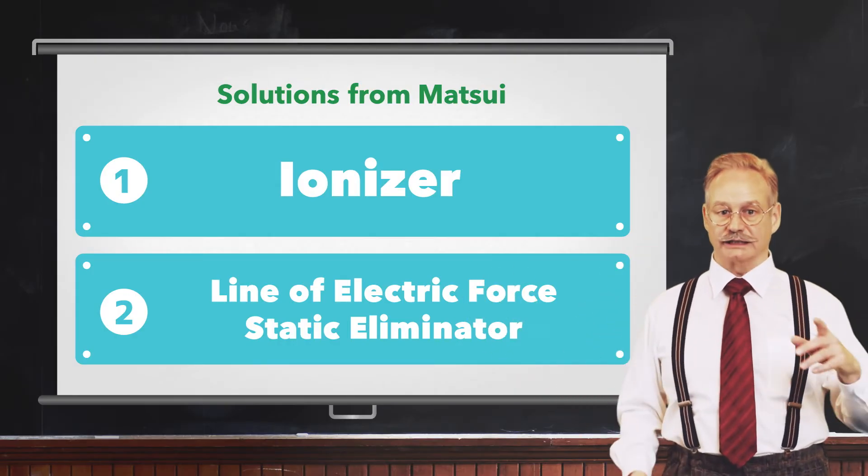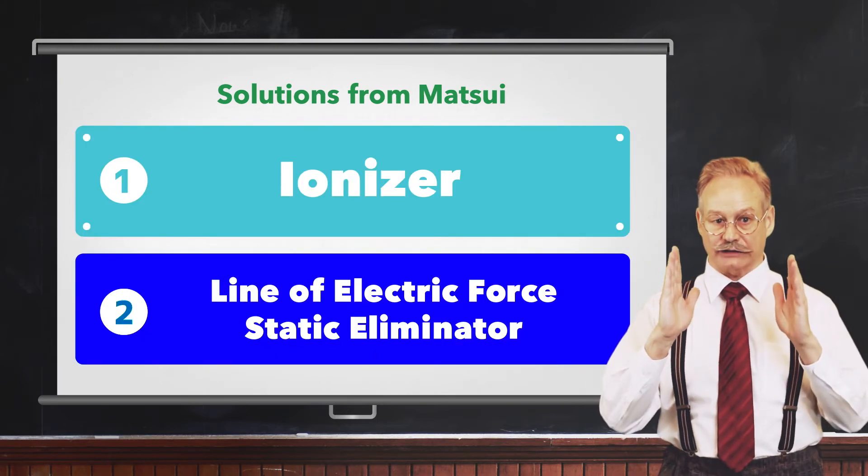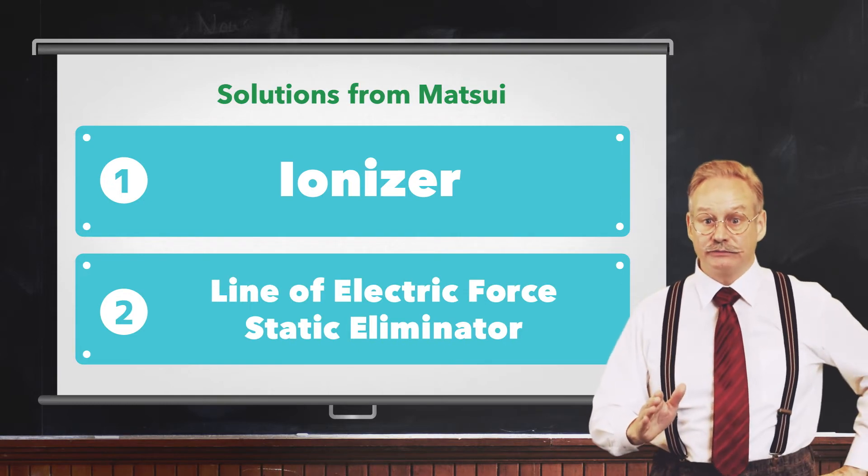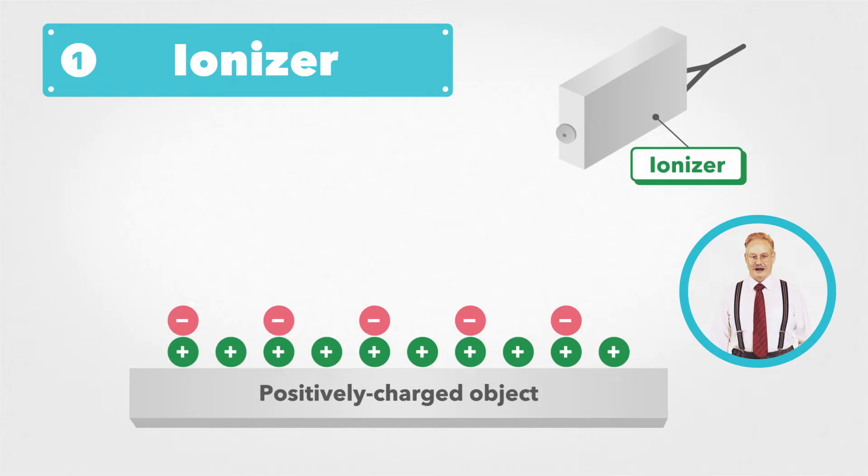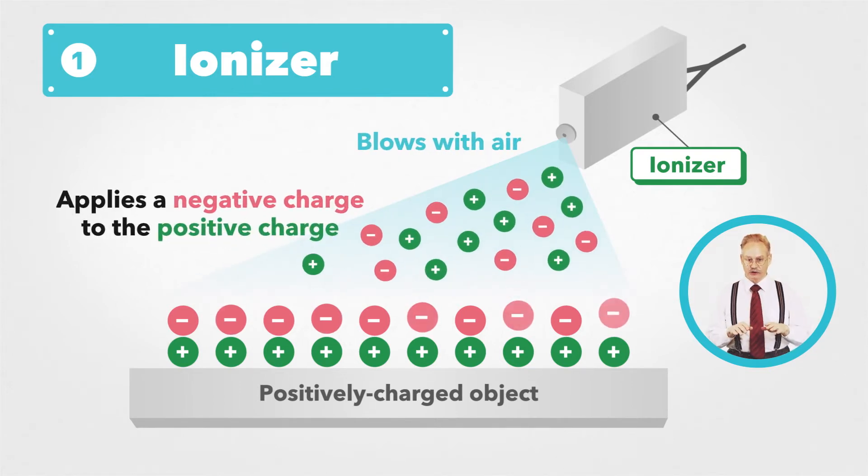Matsui uses either an ionizer or a line of electric force static eliminator to achieve this. An ionizer produces positively and negatively charged ions on the tips of needle electrodes and blows them over the surface to neutralize the electrical charge.